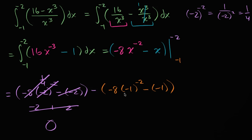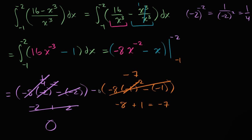Now evaluating at negative one: negative one to the negative two power is one over negative one squared, which is just one. So we have negative eight times one, plus negative one, giving negative eight plus one which equals negative seven. But remember we're subtracting negative seven, so this results in positive seven.